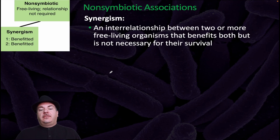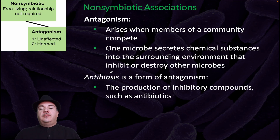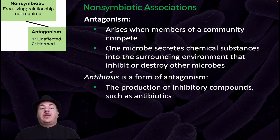In non-symbiotic associations, synergism is an interrelationship between two or more free-living organisms that benefits both but is not necessary for their survival. Antagonism arises when members in a community compete — one microbe secretes chemical substances into the surrounding environment that inhibit or destroy other microbes. Antibiosis is a form of antagonism involving the production of inhibitory compounds such as antibiotics.